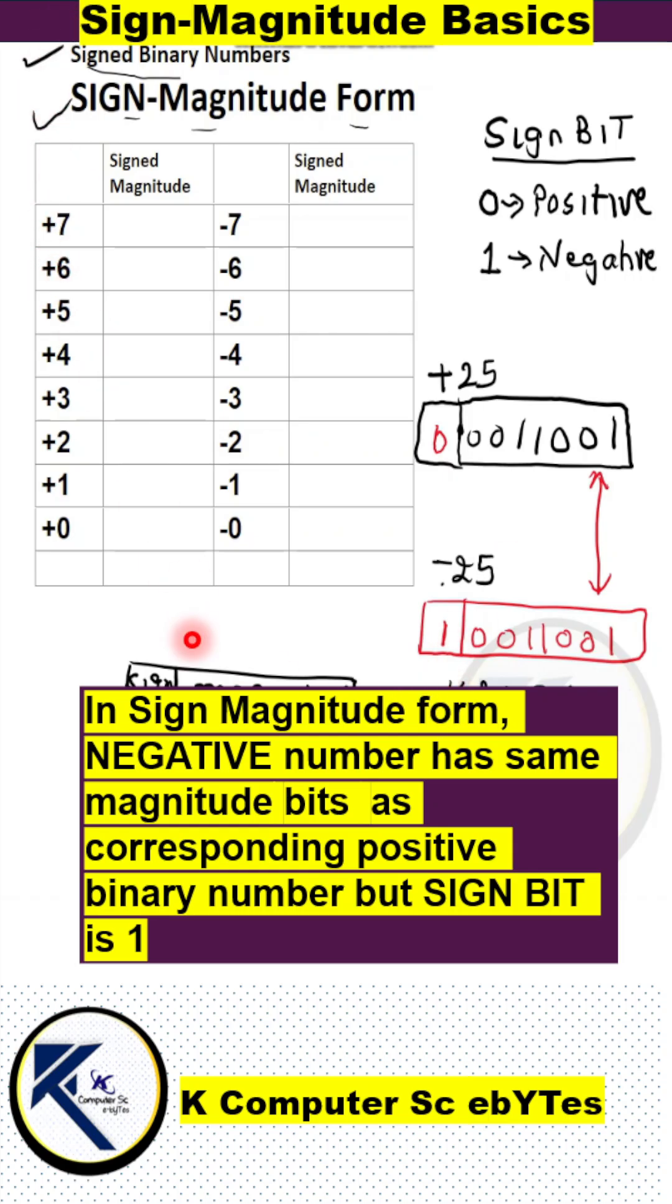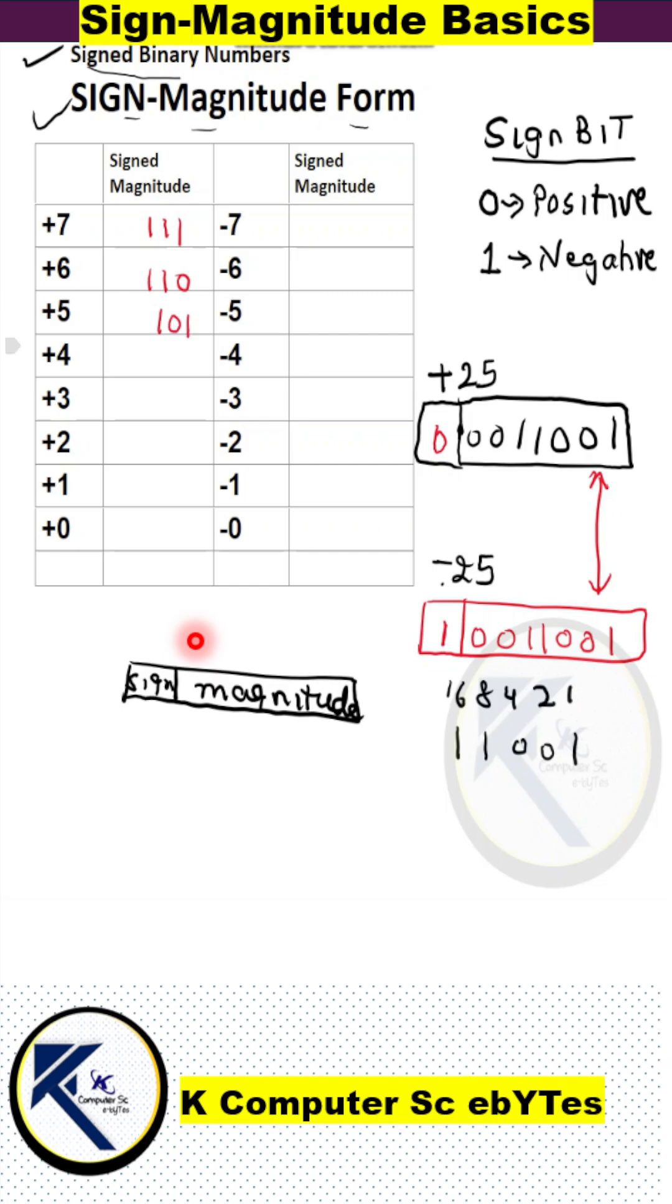So let us write the signed magnitude form of the numbers from plus 7 to minus 7. We will write it in 4-bit format. The numbers which I am writing represent the pure binary form of the values from plus 7 to plus 0, and the leftmost bit in all these cases will be 0 as they represent positive numbers.